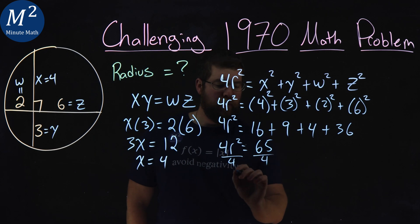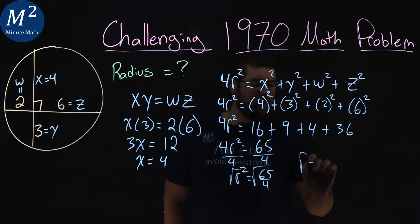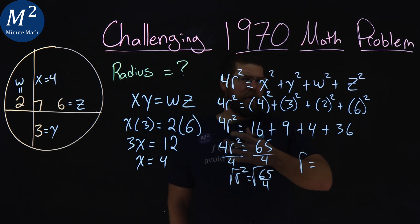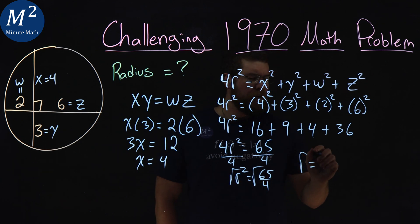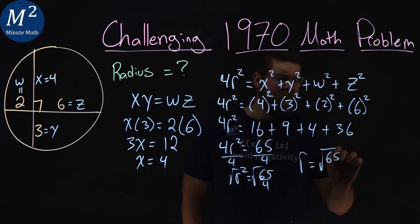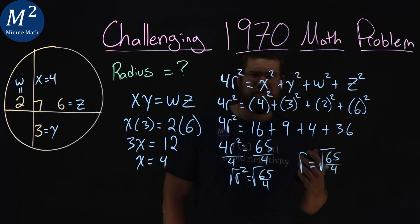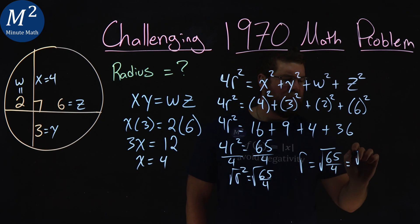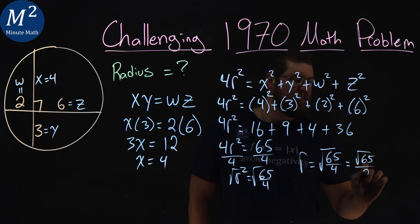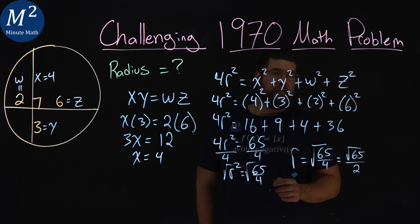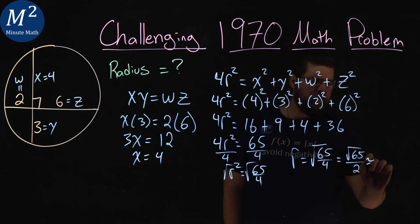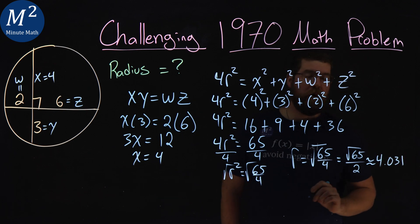Divide both sides by 4, and we have r squared is equal to 65 over 4. We take the square root of both sides, and r is now by itself plus or minus, but we don't really care about the negative, square root of 65 over 4, which simplifies to be square root of 65 over 2. And that simplifies, or as a decimal, if you care for that, approximately 4.031.